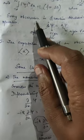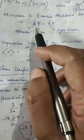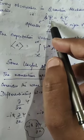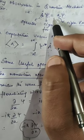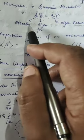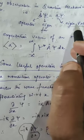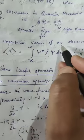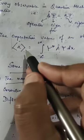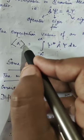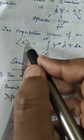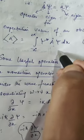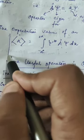So every observable in quantum mechanics has a corresponding operator, given by a capital letter with a hat. If operating on psi retains psi, then psi is the eigenfunction and the value you get is the eigenvalue a. The last postulate: the expectation value of an observable is given by the integral of psi-star, A-hat, psi — where A is the observable like position, momentum, or energy.